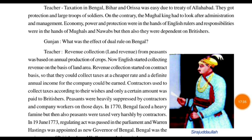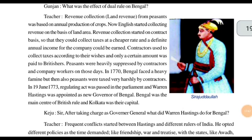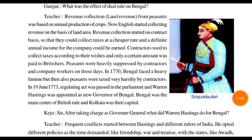The contractors were collecting more money than required but not giving the same amount to the British — keeping the extra money for themselves. Bengal faced a heavy famine, but even then the peasants were taxed very harshly by contractors. Sometimes crops were not growing or business was not going well, but these collectors were still collecting more and more taxes. On 19th June 1773, the Regulating Act was passed in Parliament and Warren Hastings was appointed as the new Governor of Bengal.